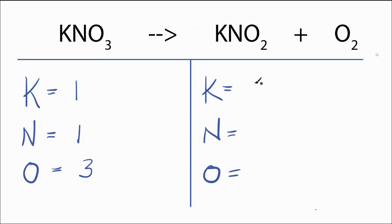On the product side, we have one potassium, one nitrogen, and then we have two oxygens here, plus these two here, for a total of four oxygens.